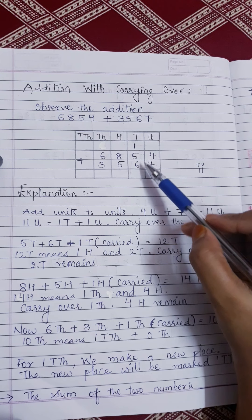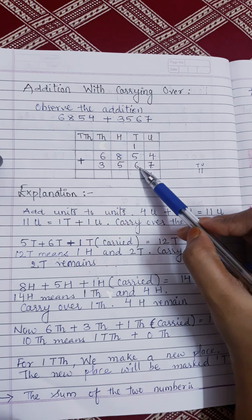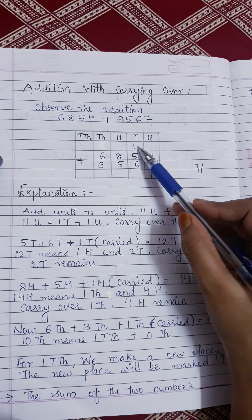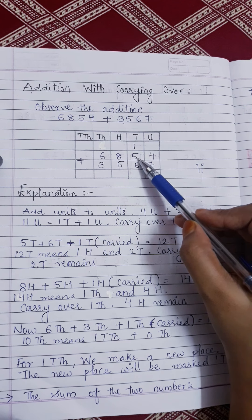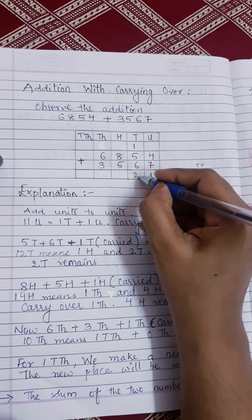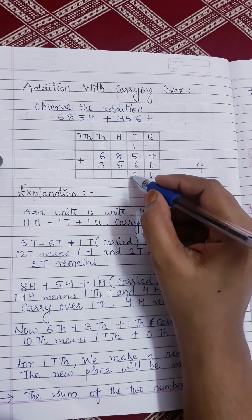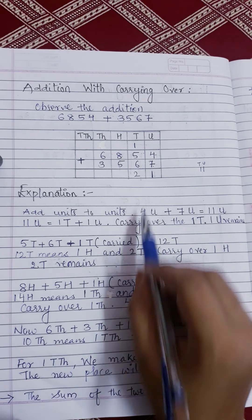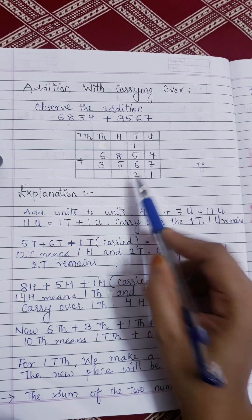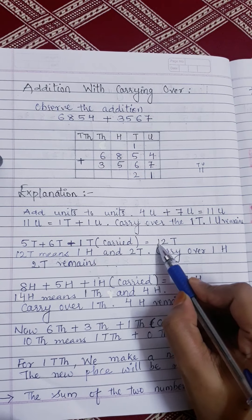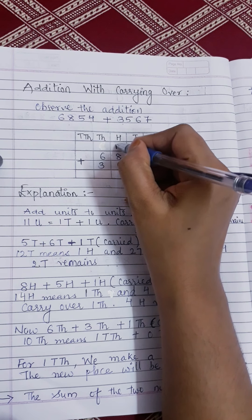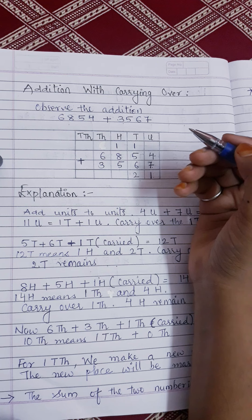Similarly, five tens plus six tens plus one ten — this is the carried number. So one plus five is six, six plus six is twelve. But we cannot write twelve here. The two is in the tens and the one is hundreds. So we write one here in the hundreds column.